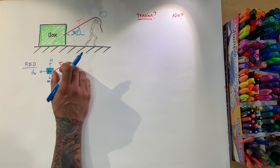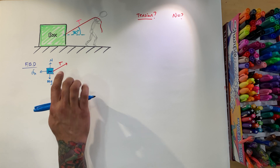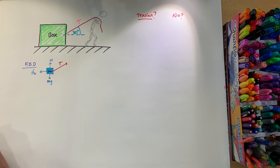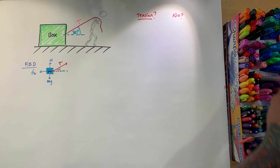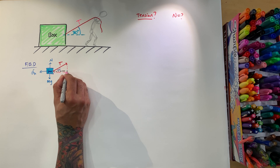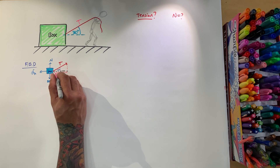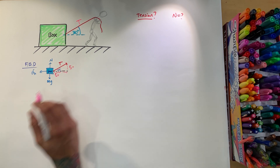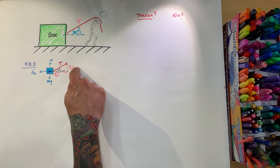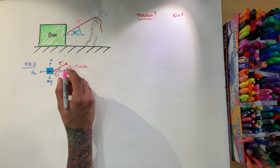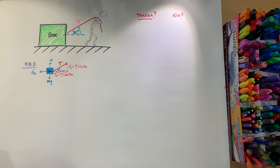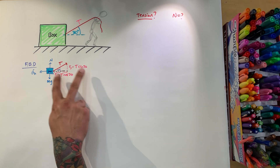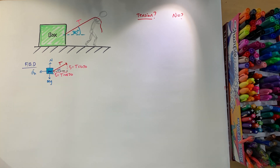We want to break this tension into components that we can use, which is x and y. Right now we can't use this diagonal tension — we need to break it up into components. Here we have 30 degrees. The tension in the x direction and the tension in the y direction: the y component is opposite over hypotenuse, so that's tension times sine of 30, and the x component is adjacent over hypotenuse, so that's tension times cosine of 30. Now that we have our free body diagram, let's do sum of forces.